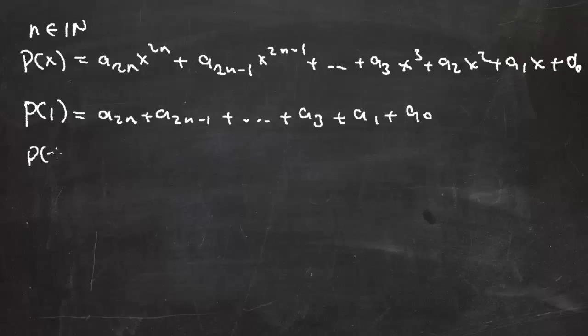x yerine -1 verdiğimizde ise a₂ₙ(-1)^(2n), 2n çift sayı olduğu için (-1)'in çift kuvvetleri 1 olacağından burada a₂ₙ. Tek kuvvetlerde ise -1 gelecek. a₂ₙ(-1) olacak, bu şekilde gidecek, yine bir tek kuvvet a₃.